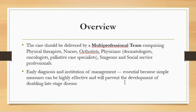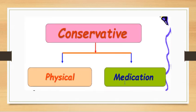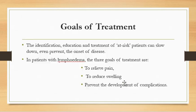Early diagnosis and institution of management is very important because simple measures can be highly effective and will prevent the development of disabling later-stage disease. Treatment is divided into conservative and surgical. The goals of treatment are: identification, education and treatment of at-risk patients to slow or prevent disease onset; relief of pain and reduction of swelling; and prevention of complications.